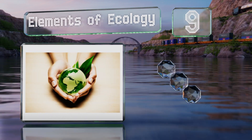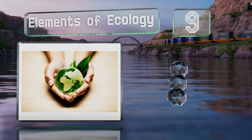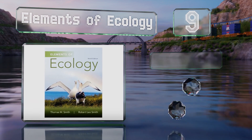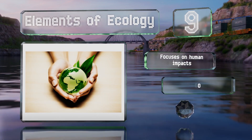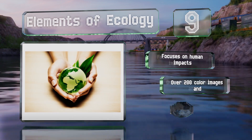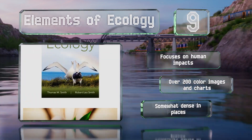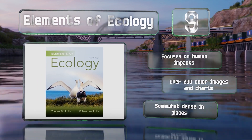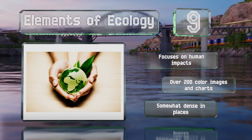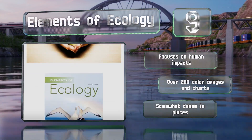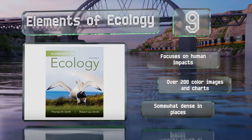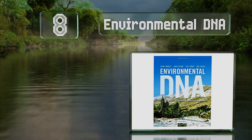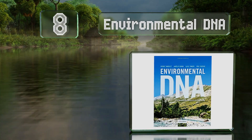At number 9, Thomas M. Smith and Robert Leo Smith bring over 50 years of combined experience in teaching and writing about the practice and study of this subject to Elements of Ecology. It helps advanced students develop quantitative and analytical skills, focuses on human impacts, and contains over 200 color images and charts, but it is somewhat dense in places.